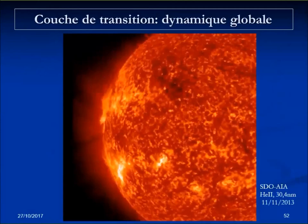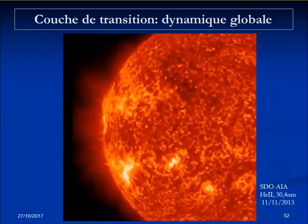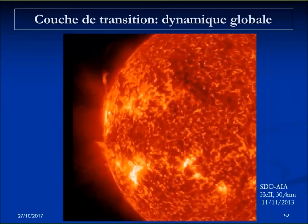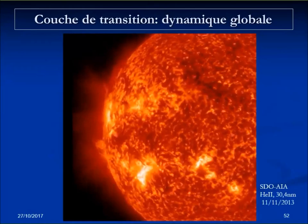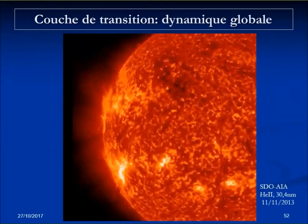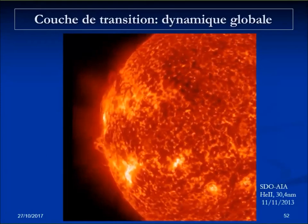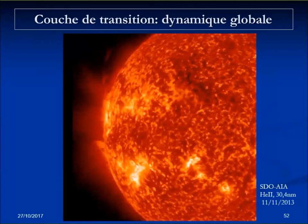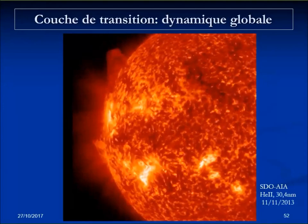Finally, movies from the Solar Dynamics Observatory in the helium-II line beautifully illustrate the dynamics: filaments seen in silhouette, some at the limb — one eruptive, others quiescent — bright plages, flares, and the blinking population over the whole Sun. This is quite different from the smooth photosphere with just a few dark spots.